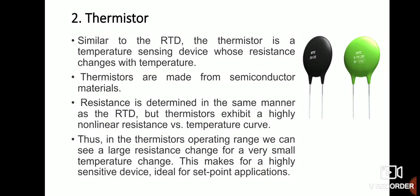The next type is the thermistor, which is similar to the RTD — a temperature sensing device whose resistance changes with temperature. There are two types: PTC (positive temperature coefficient) and NTC (negative temperature coefficient). NTC means as temperature increases, resistance decreases. PTC means as temperature increases, resistance also increases. In most cases, NTC thermistors are used in circuits to sense temperature.